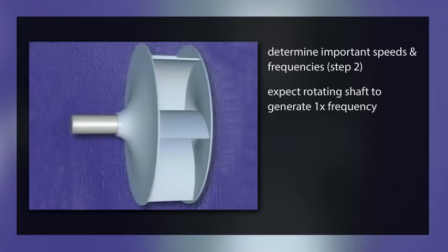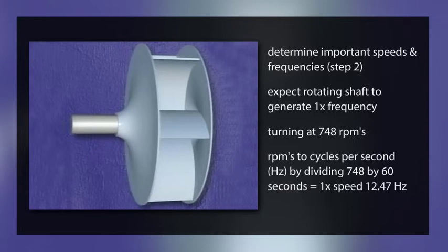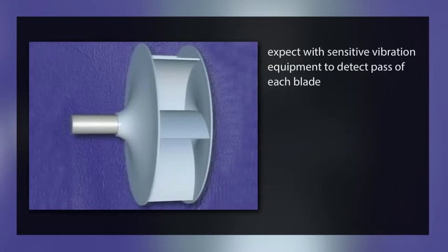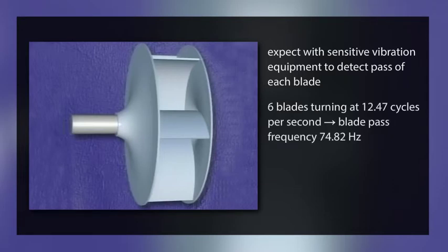Now let's determine the important speeds and frequencies — step two. We would expect the rotating shaft to generate a one-times frequency, and it is turning at 748 RPMs. We'll convert RPMs to cycles per second, or hertz, by dividing 748 by 60 seconds to get a one-times speed of 12.47 hertz. We would also expect, with sensitive vibration equipment, to detect the pass of each blade. Since there are six blades turning at 12.47 cycles per second, we could expect to find a blade pass frequency.